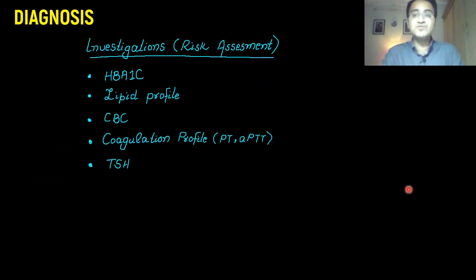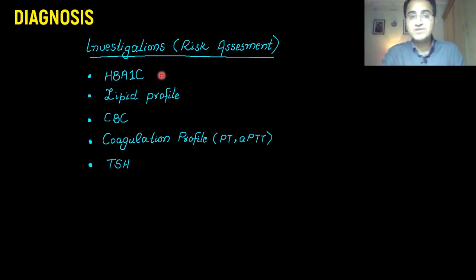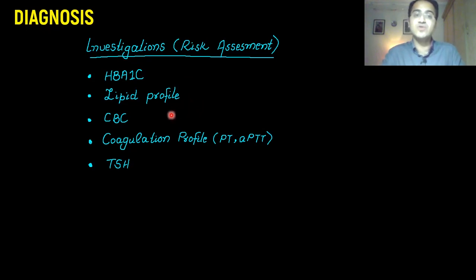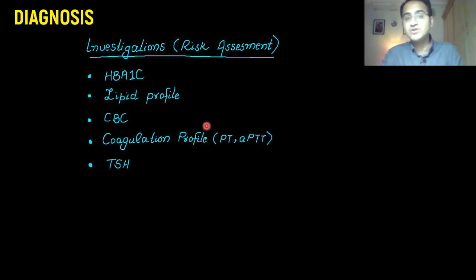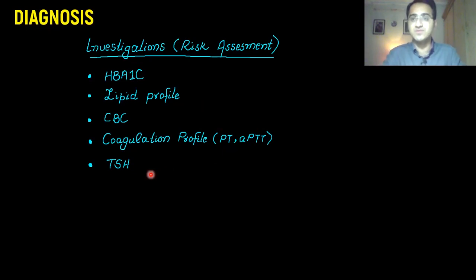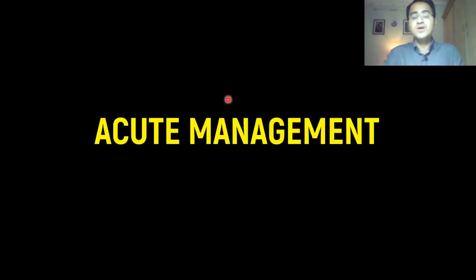Other investigations for risk assessment include HbA1c to look for diabetes, lipid profile, complete blood count, coagulation profile — PT and APTT — and TSH if there is evidence of atrial fibrillation.